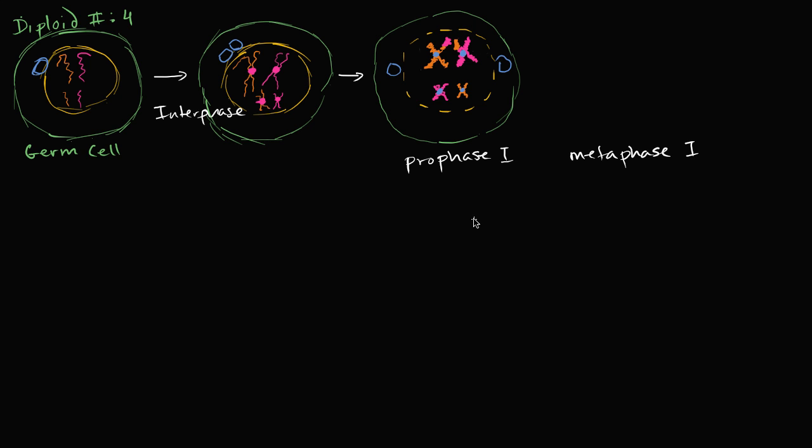Metaphase one has some similarities with metaphase in mitosis. So in metaphase one, let me draw my cell. This is the cellular membrane right over there. I have my centrosomes which are now going to play more significant roles. The nuclear membrane is now gone. And just like in metaphase in mitosis, my chromosomes are going to line up along this up-down axis.